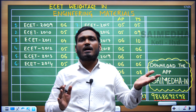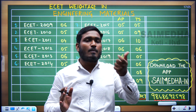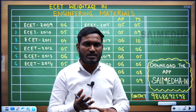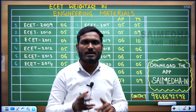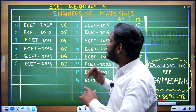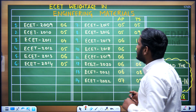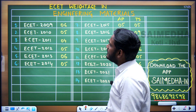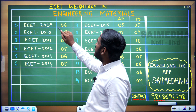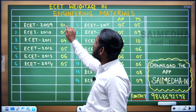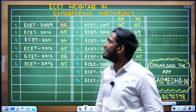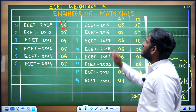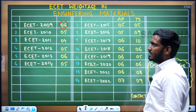As I have given the weightage marks in the ESET examination for Strength of Materials as well as Design of Machine Elements, let us see the weightage for Engineering Materials also. In ESET 2009, 6 questions were asked from the subject Engineering Materials.